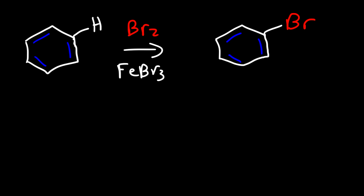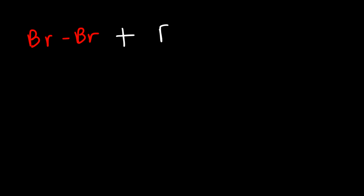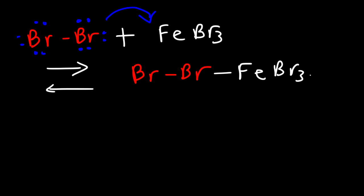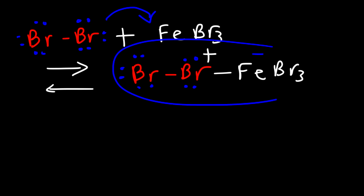So let's write a mechanism for this reaction. In the first step, bromine is going to react with the Lewis acid catalyst. Right now each bromine atom has three lone pairs. So bromine adds itself to FeBr3 in a reversible reaction and we're going to get this compound. Whenever the iron atom has four bonds, it's going to have a negative formal charge. And bromine, which now has two bonds, has a positive formal charge. So this is the species that we're going to react the benzene ring with.